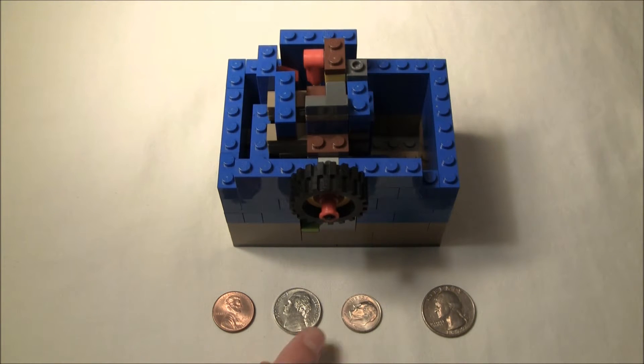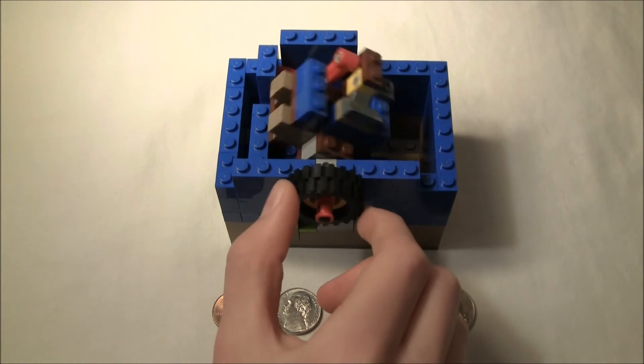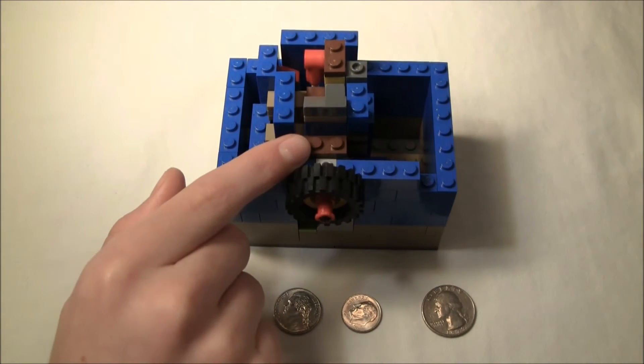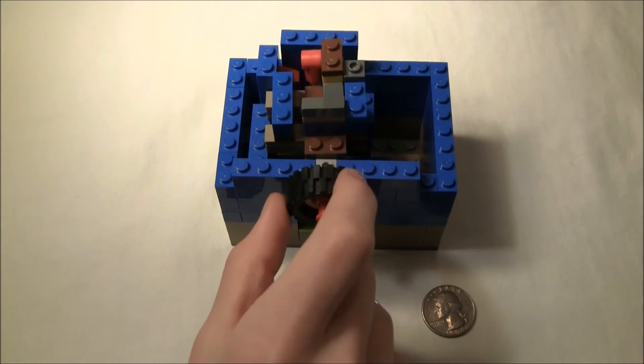So I have a penny, a nickel, a dime, and a quarter down here. And currently this is locked. It doesn't twist all the way. And your output is right where this brown piece is. You just stick a gear there. You can hook it up to any device you want.